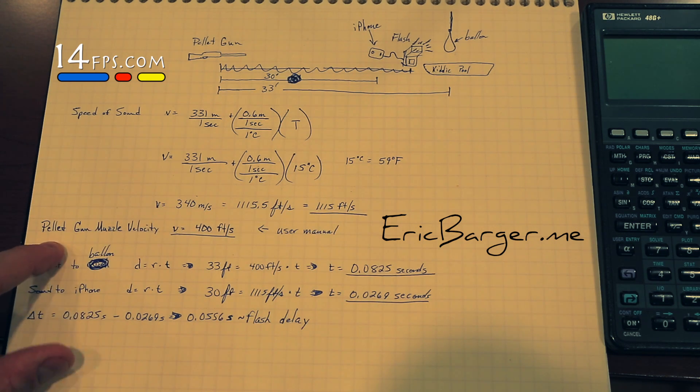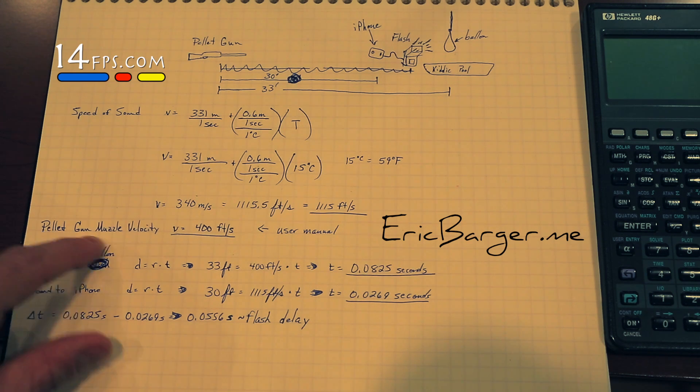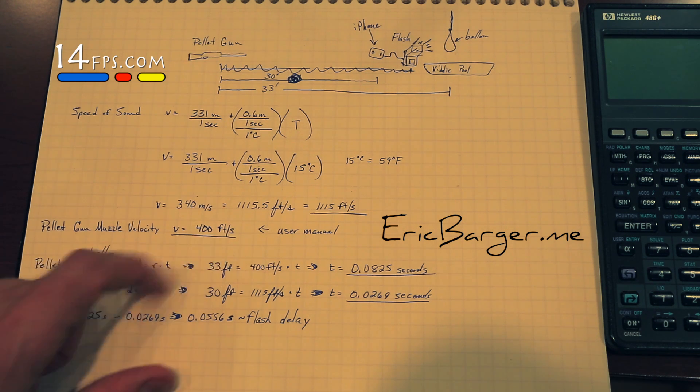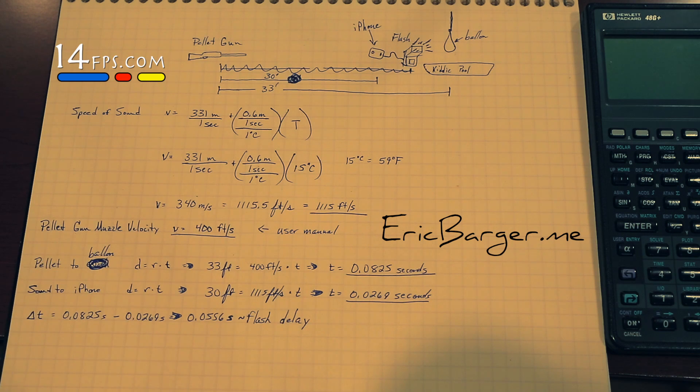The next speed we need to know is the velocity of the pellet leaving the pellet gun. The muzzle velocity in the user manual of a 30-year-old pellet gun was 400 feet per second. So that's the number we used.